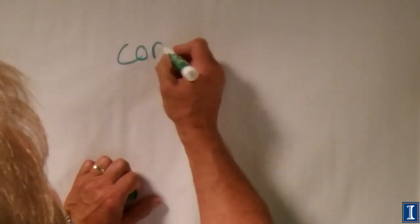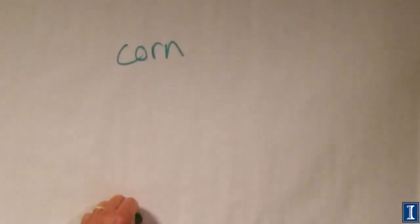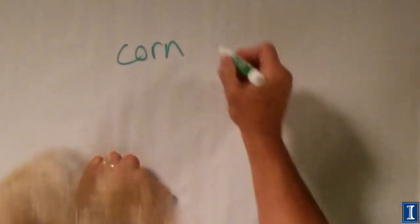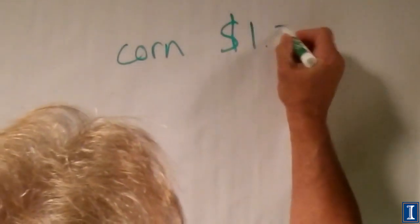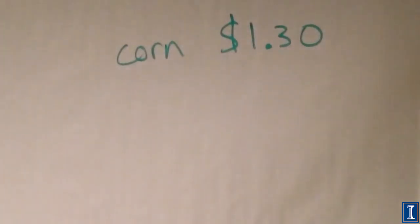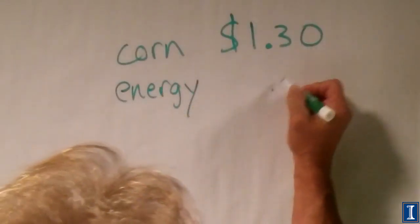Let's do it per gallon, since everyone in the United States buys gasoline per gallon — you can translate to liters. Take that $3.52 per bushel and divide by 2.7; that's $1.30. Now, when you distill, you have to boil off the water, and boiling the water takes some energy. The energy cost is $0.40.